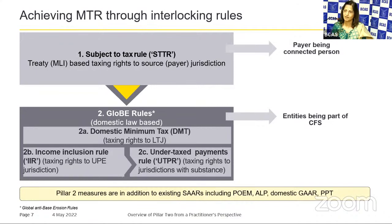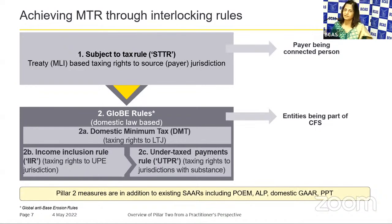GloBE rules are made up of three parts: the income inclusion rule (IIR), the undertaxed payment rule (UTPR), and before those, there is another rule called the domestic minimum top-up tax rule. We will see all three concepts with one example: domestic minimum tax, income inclusion rule, and undertaxed payment rule.